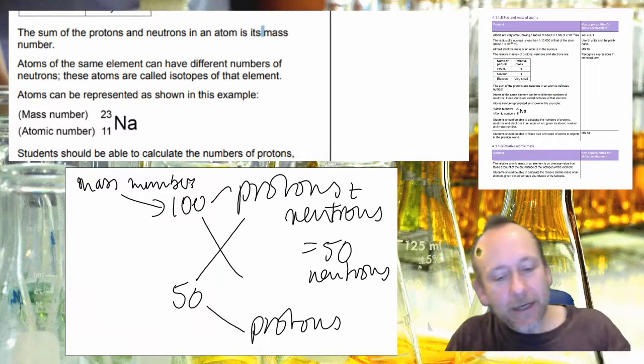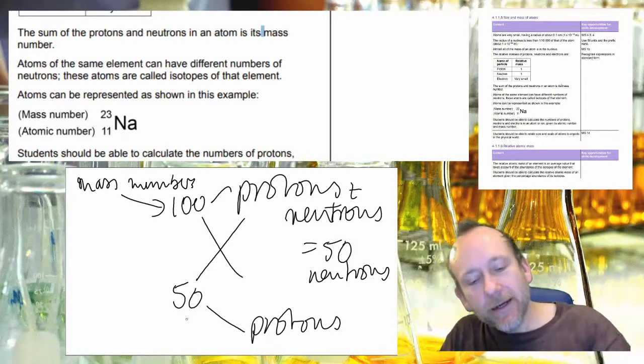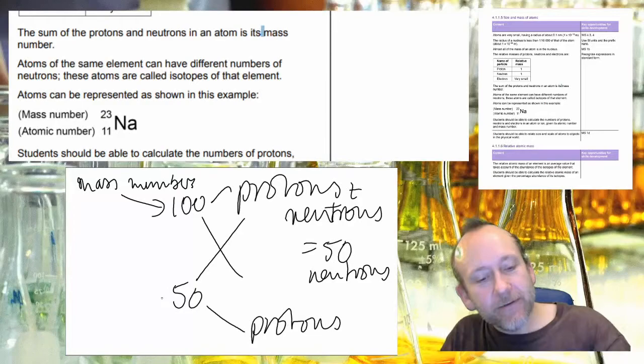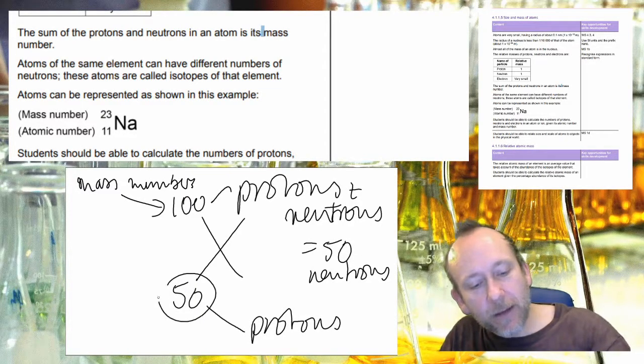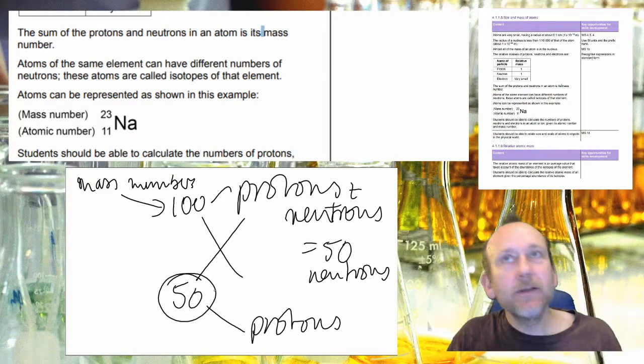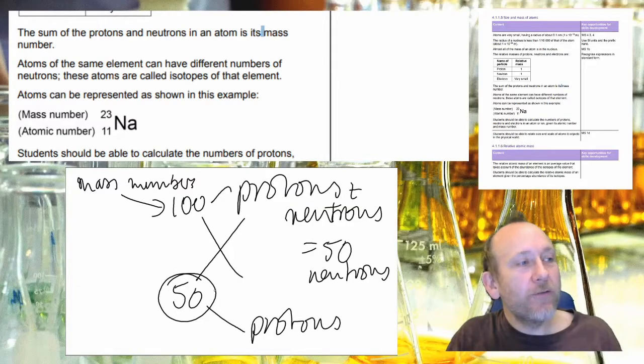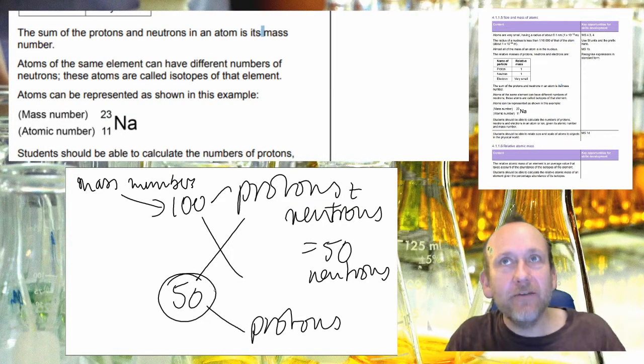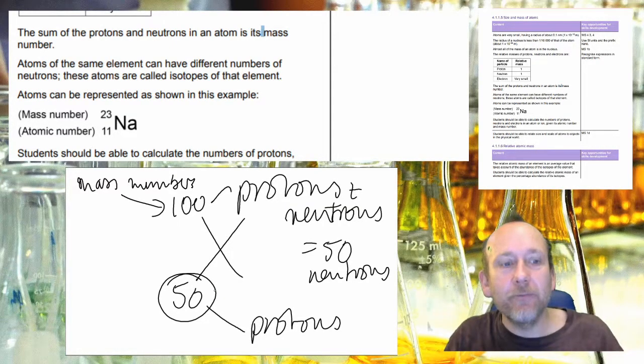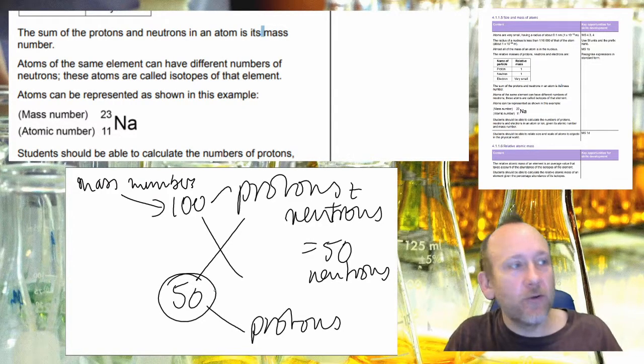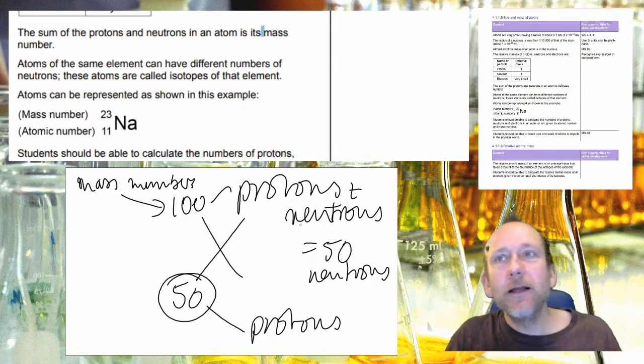So you'd have to do another calculation to get the mass number back. And the bottom number is good for identification purposes because the bottom number tells you exactly what element you've got. So if you've got 50 protons then you have a specific element. If you've got 11 protons you only ever have sodium. So that's what you need to do and I'll see you in the next video.